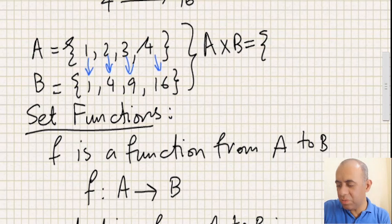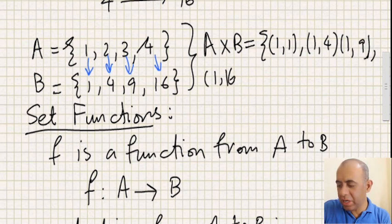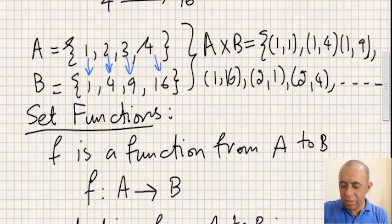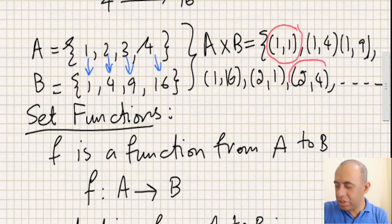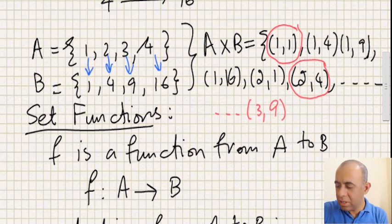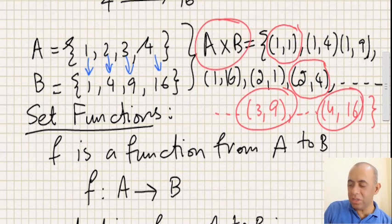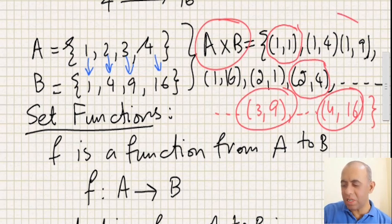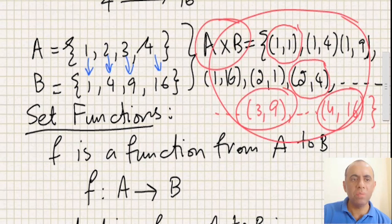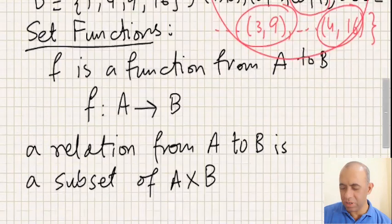The Cartesian product A cross B for these two sets would be: (1,1), (1,4), (1,9), (1,16), (2,1), (2,4), and so on. Our function only takes out four elements of this cross product — (1,1), (2,4), (3,9), (4,16) — and defines them as a new set, which is definitely a subset of the Cartesian product.